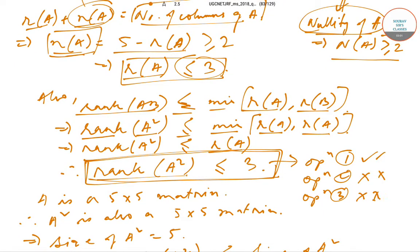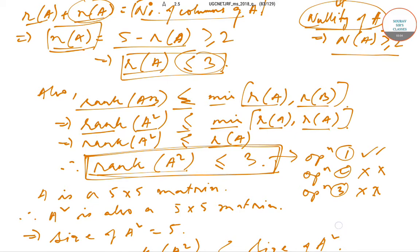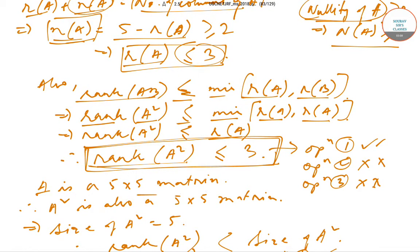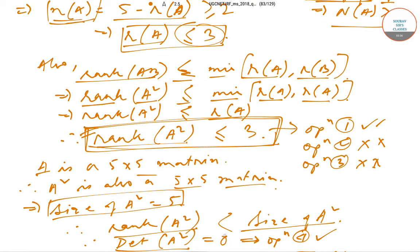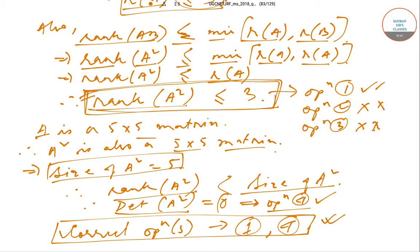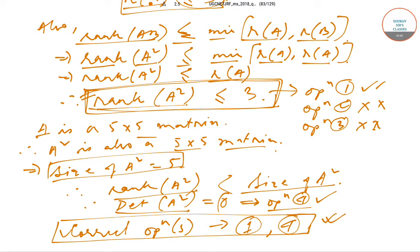Since A is a 5×5 matrix, A² is also a 5×5 matrix, so the size of A² is 5. We found rank(A²) ≤ 3, which is less than 5. When the rank of a matrix is less than its size, the determinant equals 0. Therefore det(A²) = 0, meaning Option 4 is also correct.